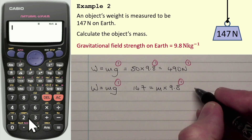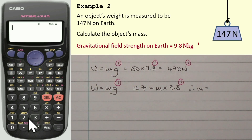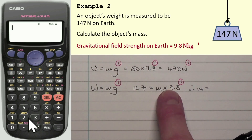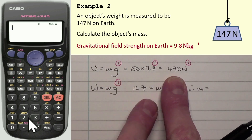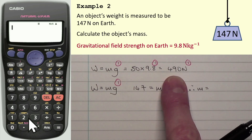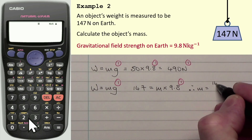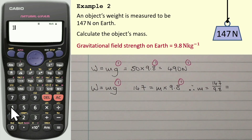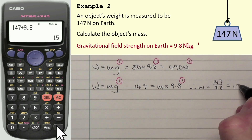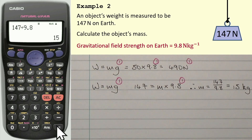How I actually rearrange the equation: I want to find m. Mass at the moment is being multiplied by 9.8. To get mass on its own, I need to do the opposite of multiplication, which is division. So I divide the right-hand side by 9.8, and I need to divide this side by 9.8 as well. That gives me mass equals 147 divided by 9.8, which is 15 kilograms. The final answer with the unit gives me the third mark.